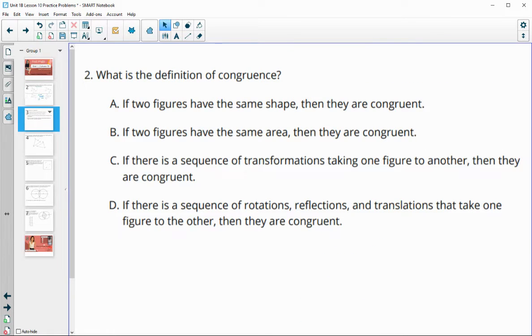So number two asks what is the definition of congruence. Remember that congruent means something has the same shape and the same size. Option A says if two figures have the same shape, then they're congruent. That's not true. They would need the same shape and the same size.